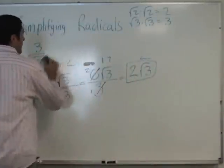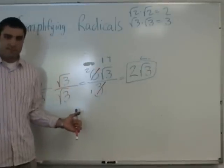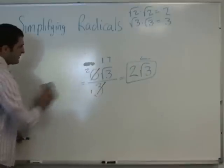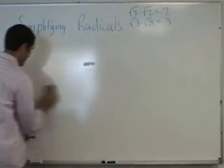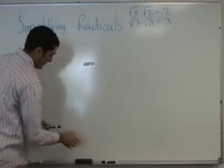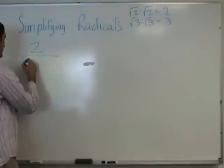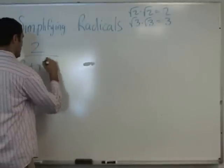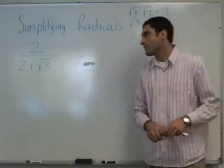Are they going to have variables in there? Yes — if the bottom had square root of x, you'd multiply top and bottom by square root of x. We're going to do one more thing you've never seen anything like in your entire life. Prepare yourself.